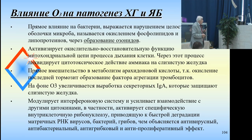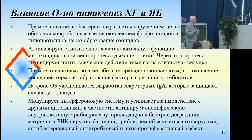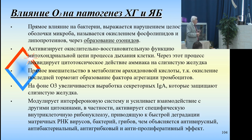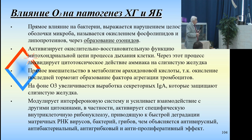On the pathogenesis of chronic gastritis and ulcers: ozone has a direct influence on bacteria, expressing disruption of microbial membrane integrity caused by oxidation of phospholipids or proteins through the formation of ozonides. Against the background of ozone therapy, production of secretory immunoglobulin A increases, protecting the gastric mucosa. It modulates the interferon system, enhances interaction with other cytokines, in particular activates specific intracellular ribonuclease, leading to rapid degradation of matrix RNA of viruses, bacteria, and fungi — which explains the antiviral, antibacterial, antifungal, and antiproliferative effects.